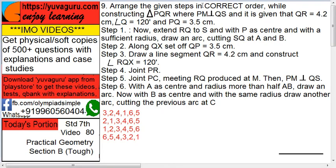Arrange the given steps in the correct order while constructing triangle PQR where PM is perpendicular to QS and it is given that QR equals 4.2 cm, angle Q equals 120 degrees and PQ equals 3.5 cm. So this is the question and these are the steps, so you have to arrange them in the correct order.